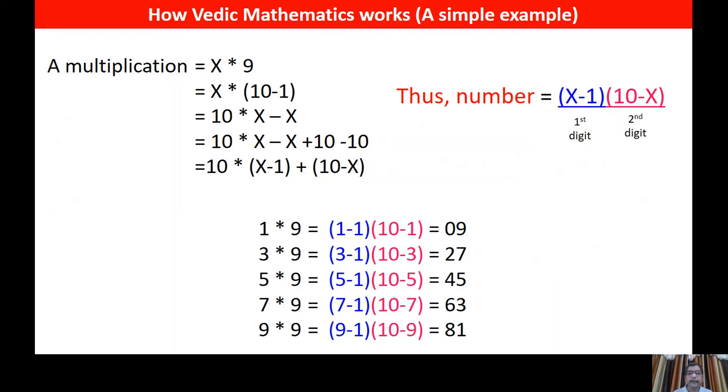So we can see that this multiplication has been transformed into something of subtraction 1 and 2. So this is what is the simplification of calculation.